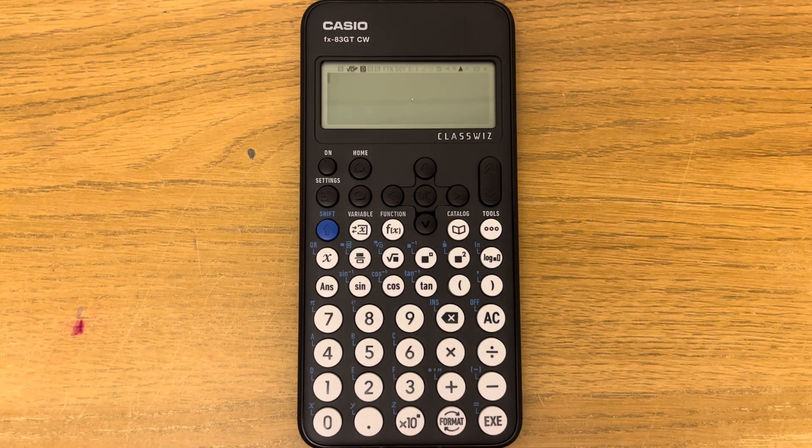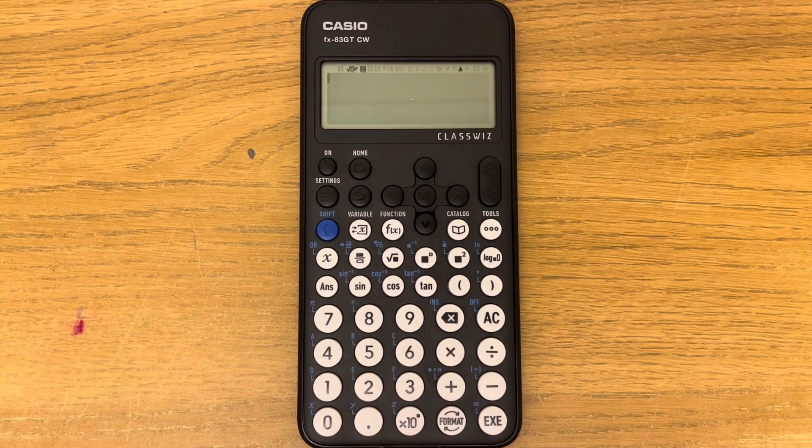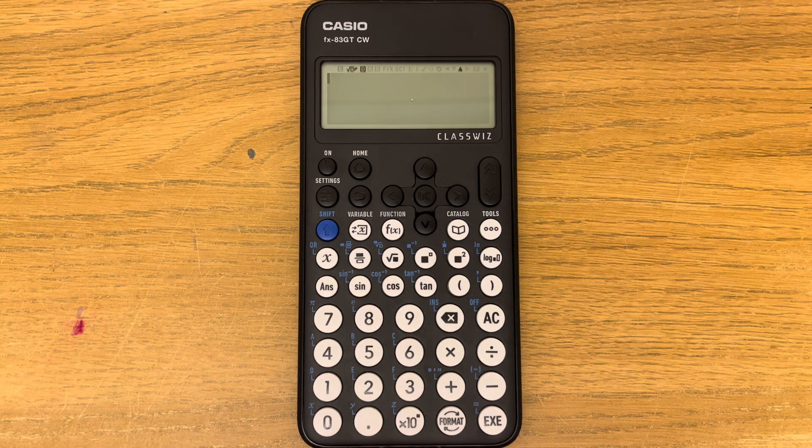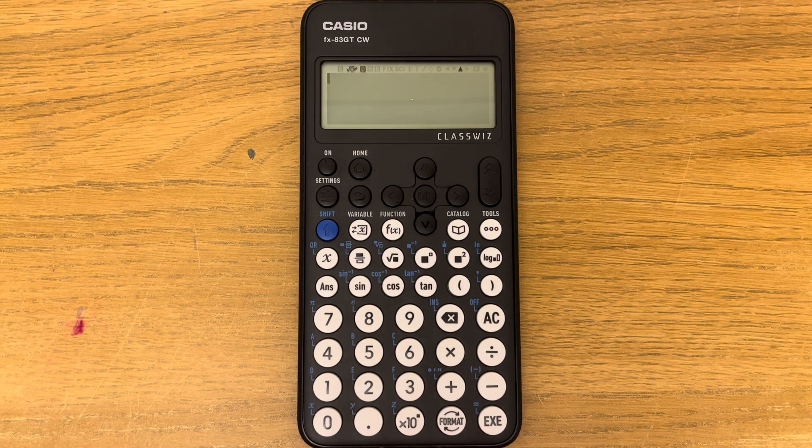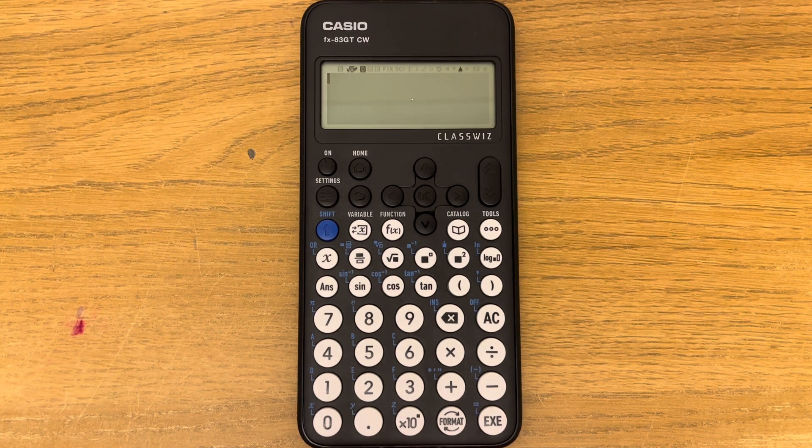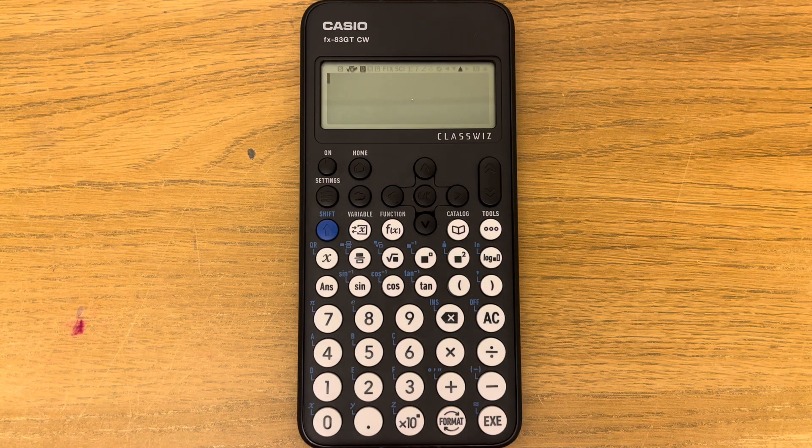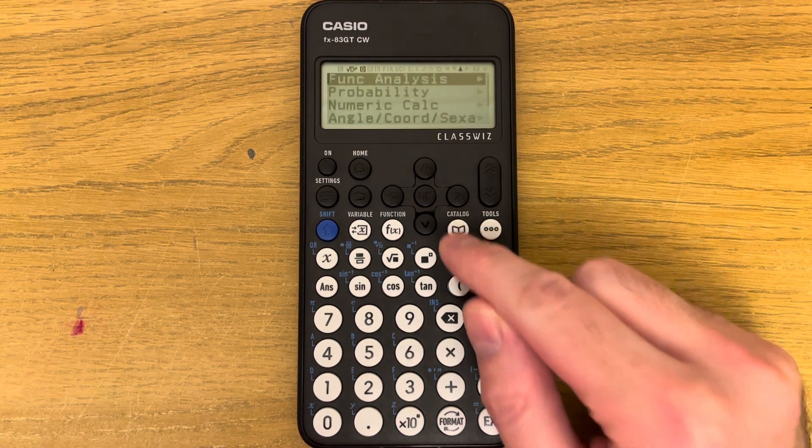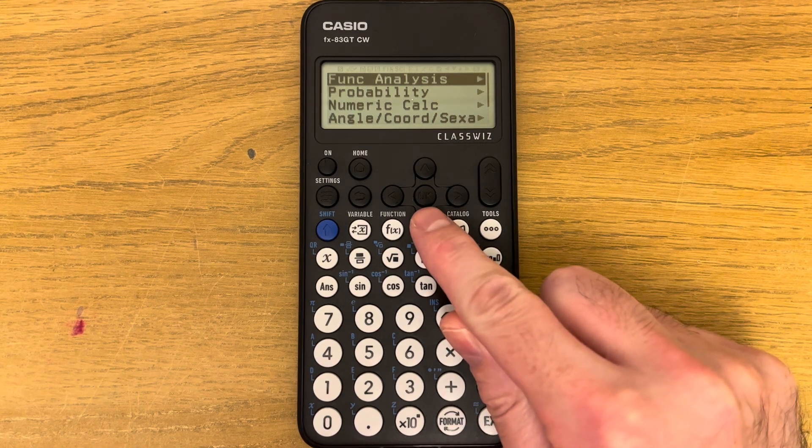Hi guys, welcome back. Today I'm going to show you how to get random integers on the Casio fx-83GT CW scientific calculator. To get random numbers, you need to press Catalog, scroll down to